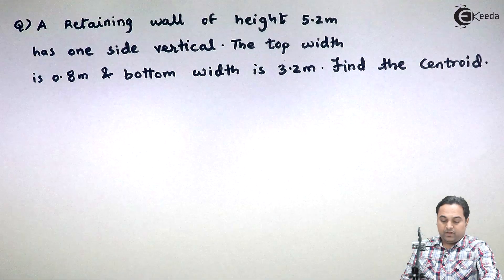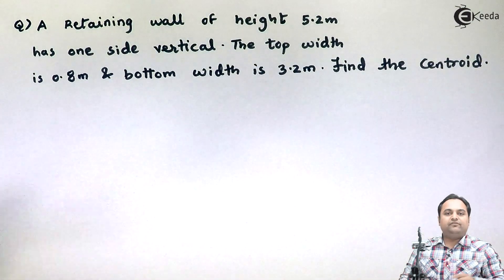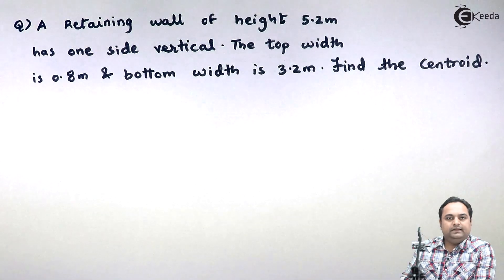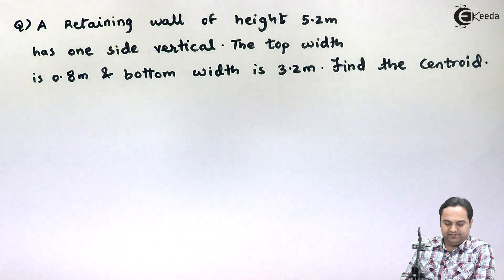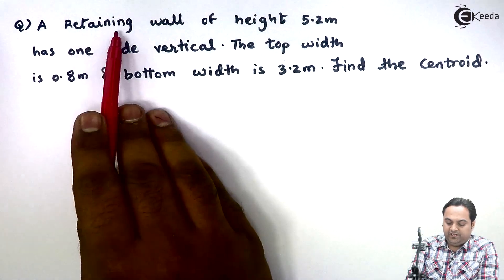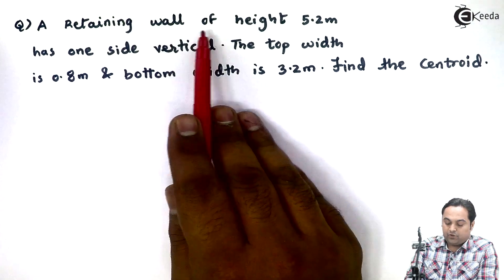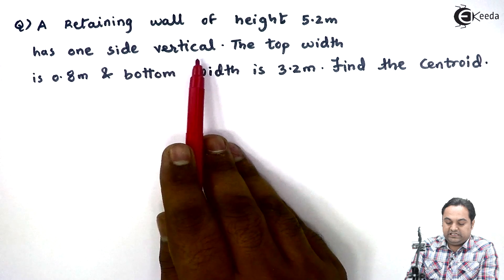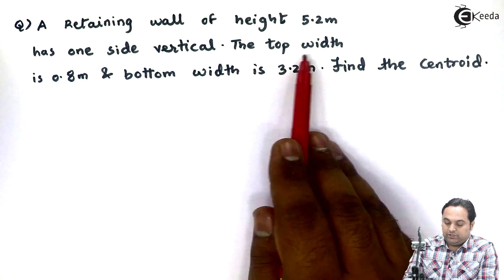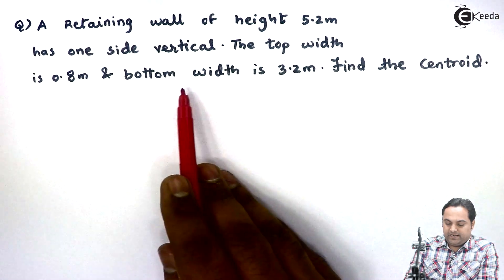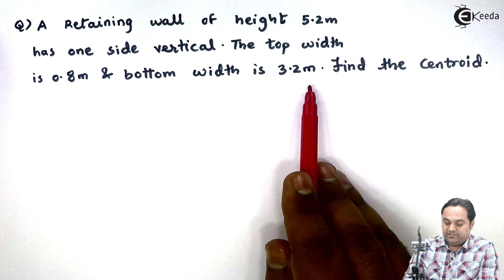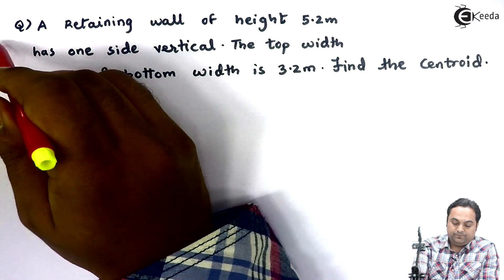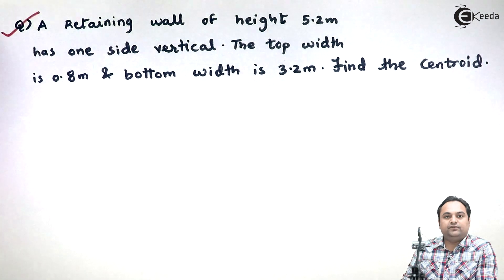Hello friends, now we will find the centroid for a retaining wall. A retaining wall of height 5.2 meters has one side vertical. The top width is 0.8 meters and the bottom width is 3.2 meters. Find the centroid — this is the question in front of us.